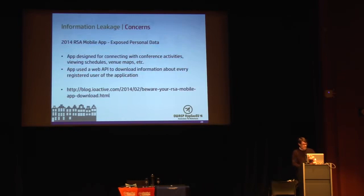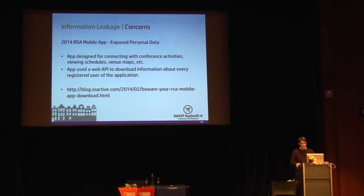A fun example: the 2014 RSA mobile application, which the IO Active guys blogged about, was a typical conference app intended for users to gather information about sessions and venue maps. But its backend API had a 'get users' method that would return all registered users from the conference along with a lot of their personal information — company, position, email address, and social media links to LinkedIn and Facebook — just a treasure trove of information.